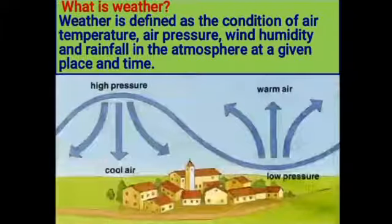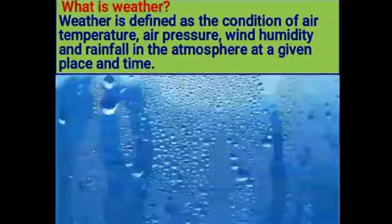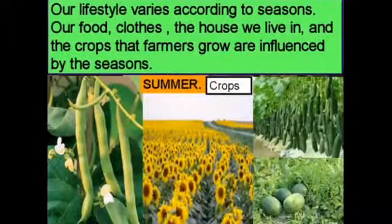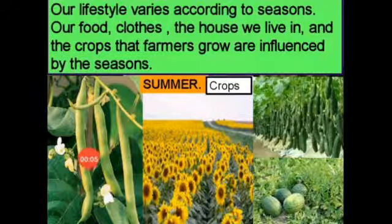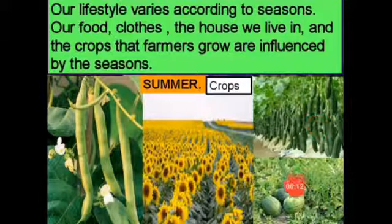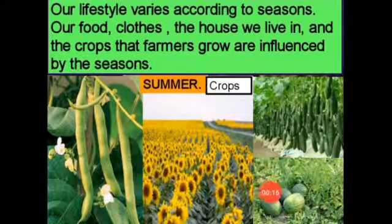Weather is the condition of air temperature, air pressure, wind, humidity, and rainfall in the atmosphere at a given place and time. Farmers grow sunflower, cucumber, and watermelon during the summer season in India.